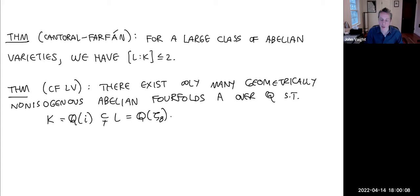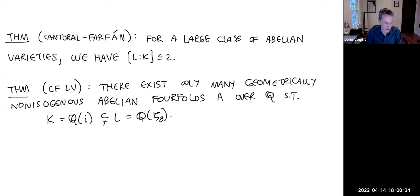In general, endomorphisms don't have a nice way of presenting themselves. If we want to be explicit — to test conjectures and prove theorems — the right place to look is Jacobians of curves. Within Jacobians, it's still hard to write down ones with non-trivial endomorphisms, but the best way is for the curve to have automorphisms. Those automorphisms induce endomorphisms of the abelian fourfold.